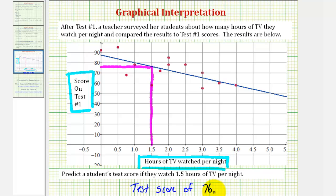This does not mean that if a student watches 1.5 hours of TV per night, they'll score 76 on the test. Notice if we look at the actual data, there's a student right here that watched 1.5 hours of TV per night,